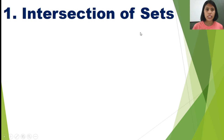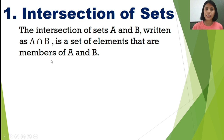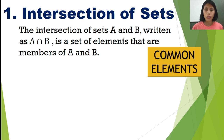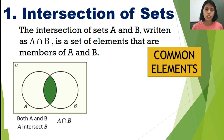The first operation of sets is intersection of sets. Intersection of sets A and B — you can see the symbol, it looks like an inverted U — is a set of elements that are members of both A and B. Therefore, to find the intersection of sets, we need to find the common element or elements. Here is the illustration showing the relationship of the two sets: set A is the first circle and set B is the second circle. The shaded portion is what we call the intersection of sets.